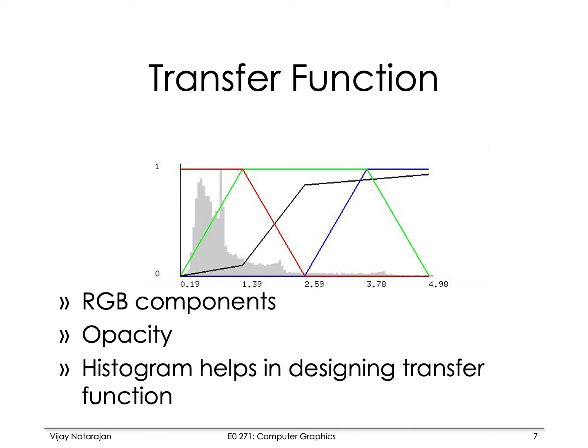For example, in this case, the histogram indicates that the scalar values above 1.5 are sparse. There are very few points with scalar values above 1.5. We might want to associate these points with higher opacity so that they can be highlighted and assign lower opacities or more transparent colors to the lower values, because several voxels have scalar values in the range 0 to 0.5 or 0 to 1. Different colors at different scalar ranges allow us to highlight the different features within the field.